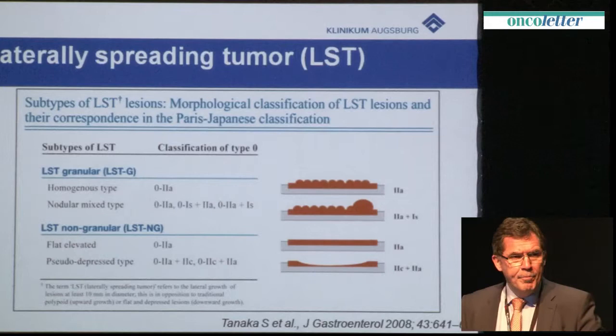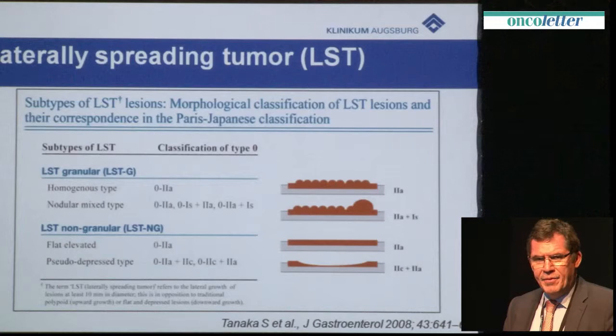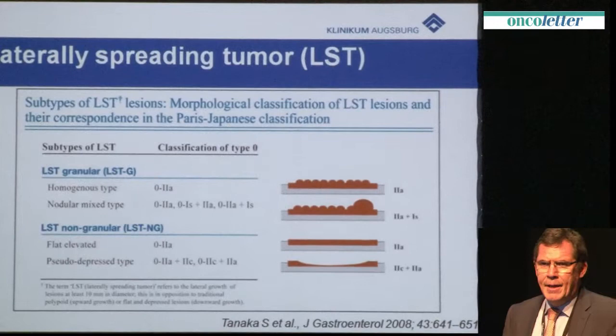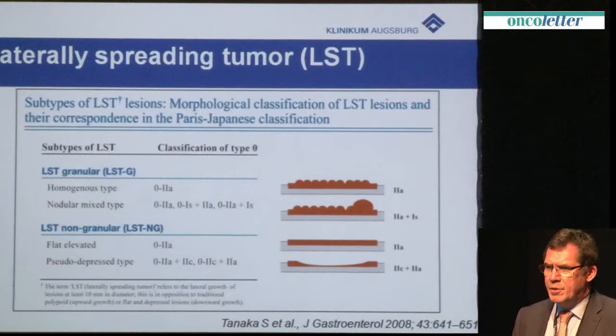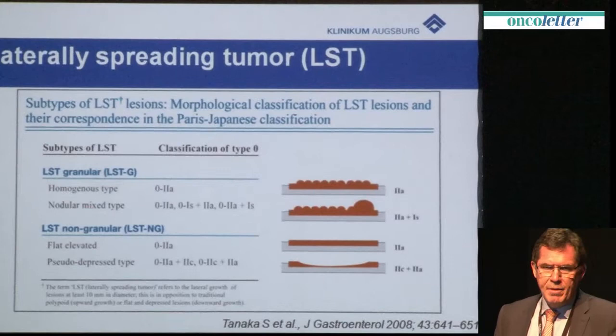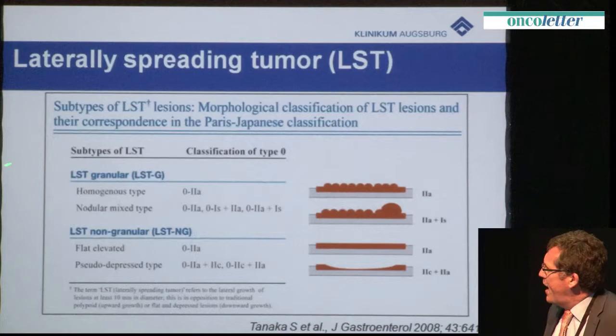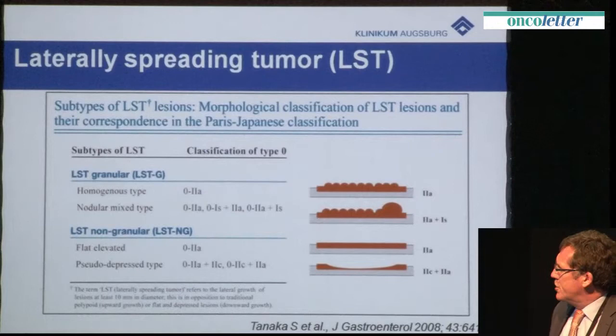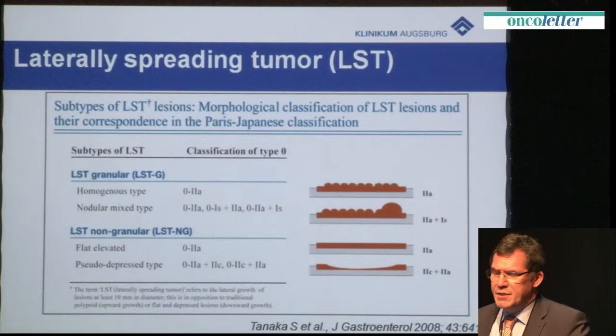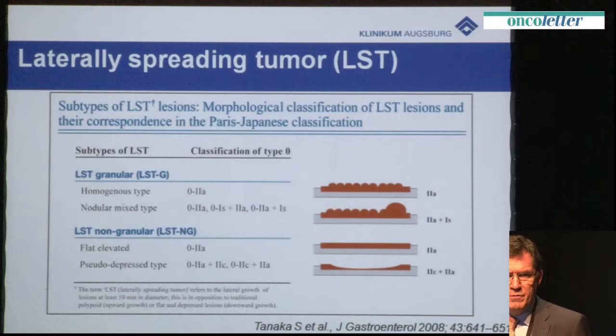Many of our patients have benign polyps and the risk for malignancy is quite low, but nevertheless some polyps with benign histology are defined as malignant by the pathologist after resection. Therefore we have to differentiate the macroscopic view of these lesions. We differentiate the so-called lateral spreading tumor: the granular type with a homogeneous area of nodules, which is usually benign and can be treated easily with EMR or ESD. The non-granular type lesions have a higher risk of malignancy and are a good indication for ESD to achieve en bloc curative resection.